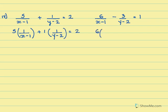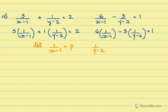Now here again, 6 coefficient, x minus 1 variable, 3 coefficient, 1 over y minus 2 variable, equal to 1. Then we say let 1 by x minus 1 be equal to p and 1 over y minus 2 be equal to q.